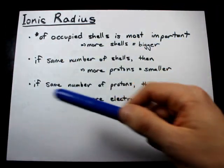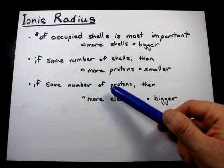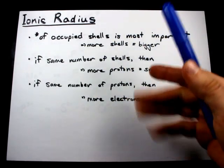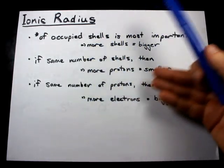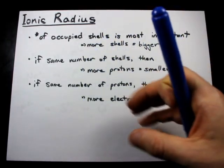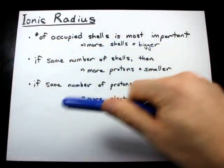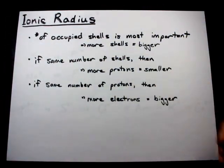And finally, if you have the same number of protons, which will happen if you're asked to compare two ions of the same element, then more electrons will mean a bigger atom, simply because there is a little bit of extra repulsion between those minus charges floating around.